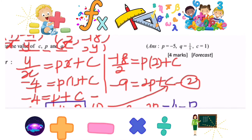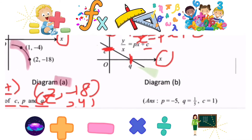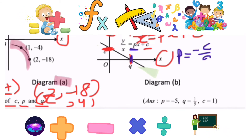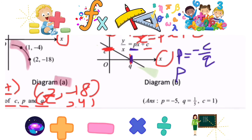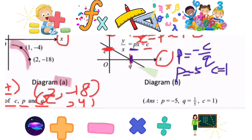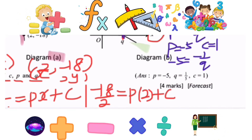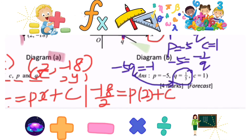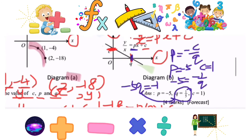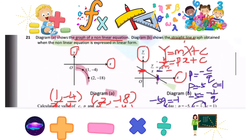Now we solve for q. The gradient p is equal to -c/q. We have p = -5 and c = 1, so -5 = -1/q. This gives -5q = -1, hence q = 1/5.